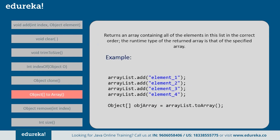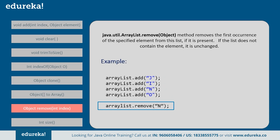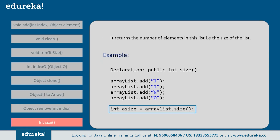Next is toArray() — this method returns an array containing all the elements in the list in their current order. Next is the remove method — this removes the first occurrence of a specified element from the list if present. For example, if you want to remove 'n' from the list, it removes only the first occurrence; any additional occurrences remain. Finally, size() returns the number of elements in the list. If you have added four elements, it returns the ArrayList size as 4.